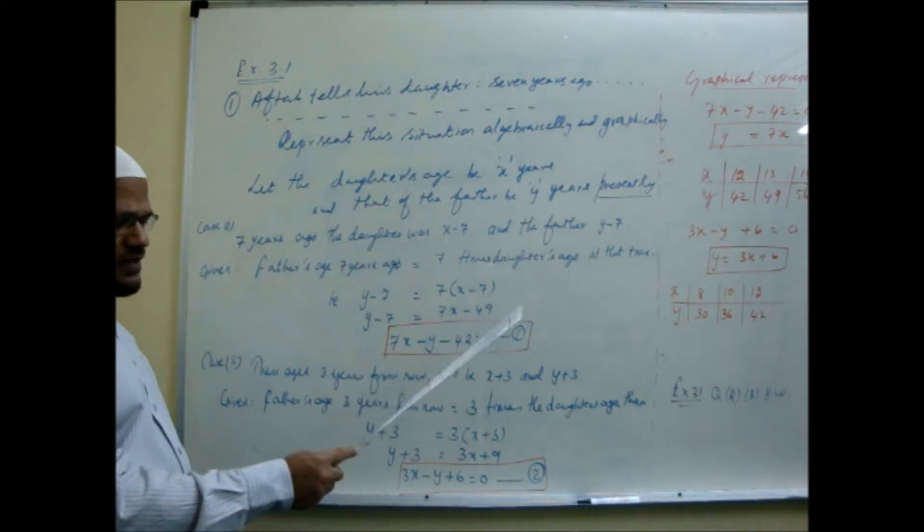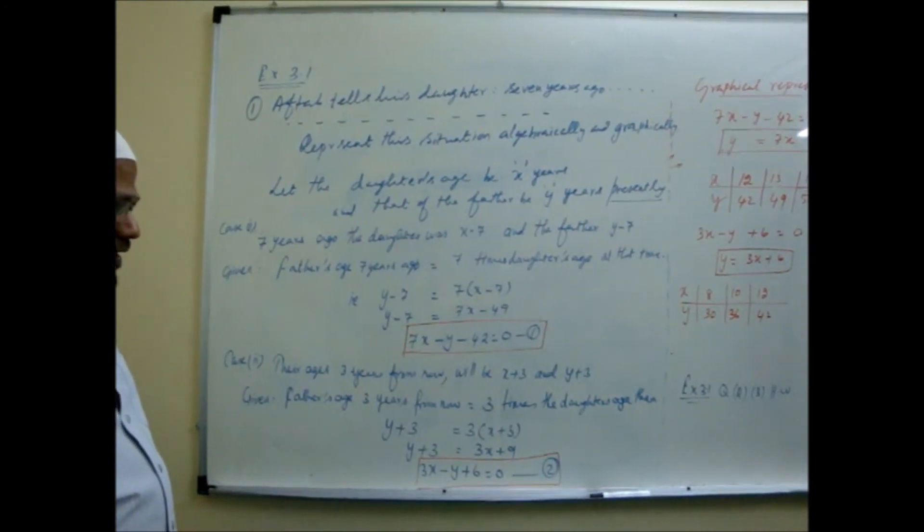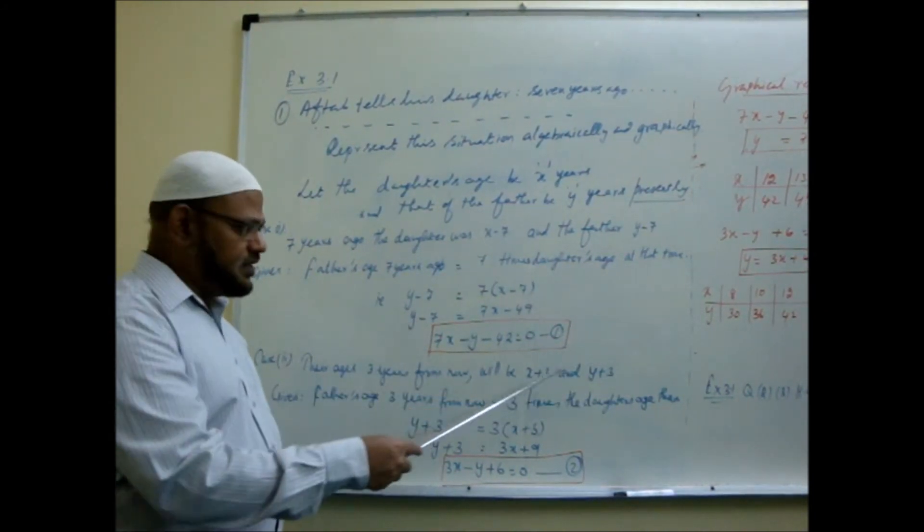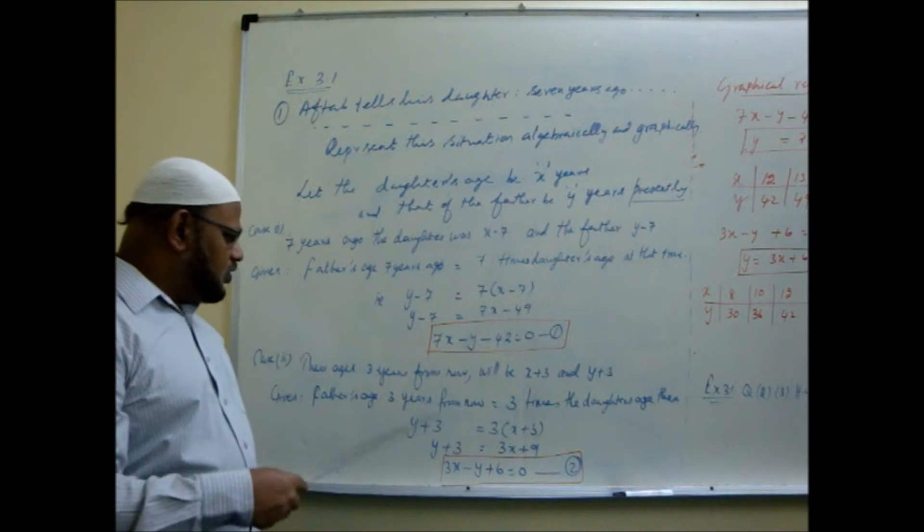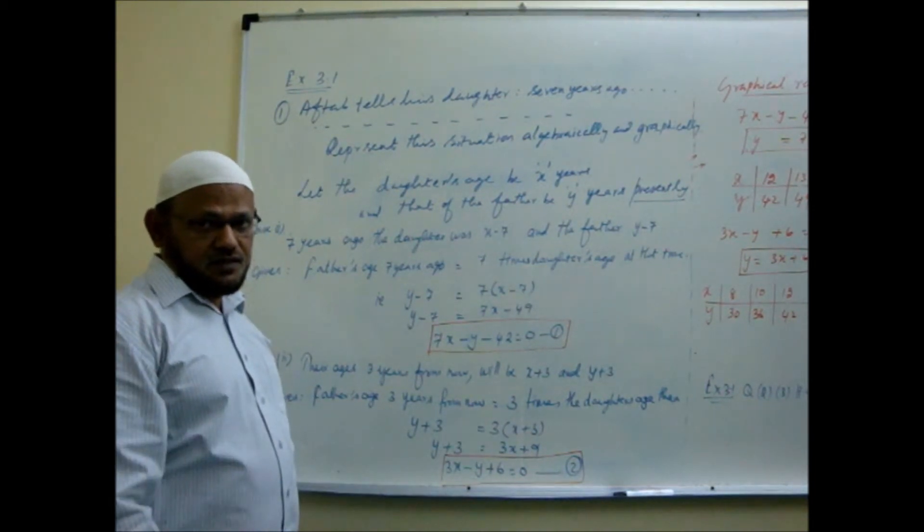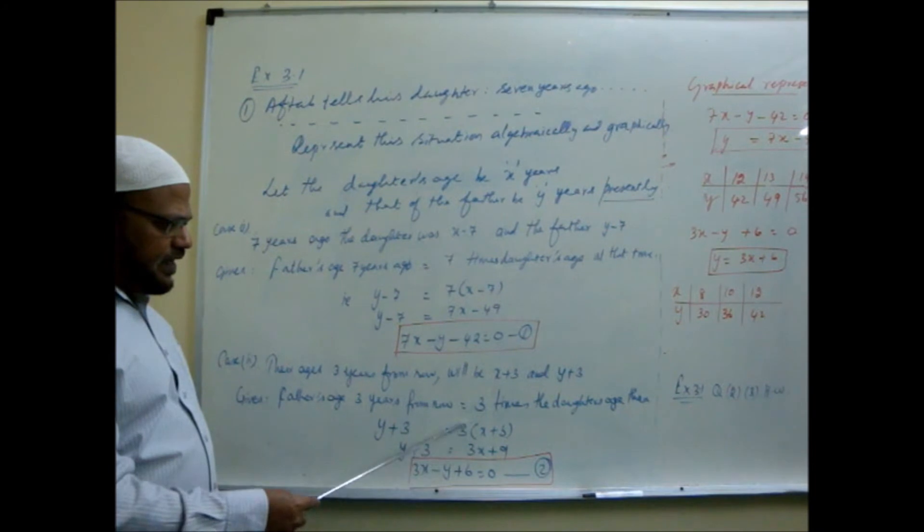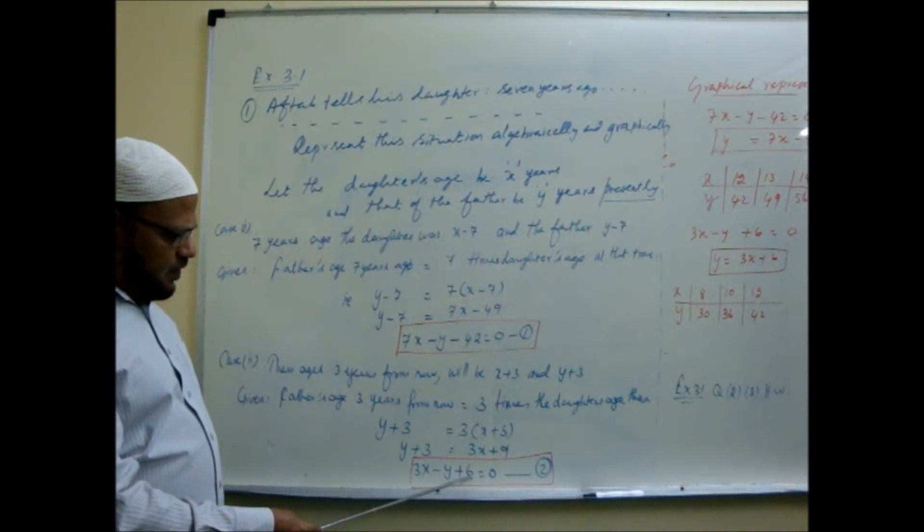Arrange x term, y term, constant term equal to 0. Otherwise you can write y is equal to 7x minus 42 also. Now go to the second case. The second case discusses about ages 3 years later, 3 years from now. Present age is x and y. After 3 years, what will be their ages? x plus 3 and father, y plus 3. Daughter will be x plus 3, father also simultaneously 3 more. What they told about the ages 3 years from now? Father will be 3 times as old as the daughter 3 years later. So y plus 3 is equal to 3 times x plus 3. This bracket open and simplest form. You get 3x minus y plus 6 is equal to 0. These two equations are only algebraic way of expressing the given question.